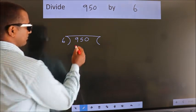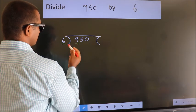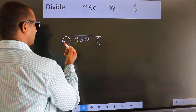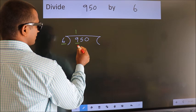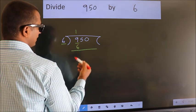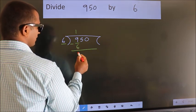Here we have 9, here 6. A number close to 9 in the 6 table is 6 once 6. Now we should subtract. We get 3.